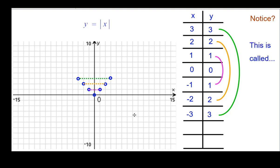So this is called, wait for it, symmetry. These points are symmetric about the y-axis or the line x equals zero.